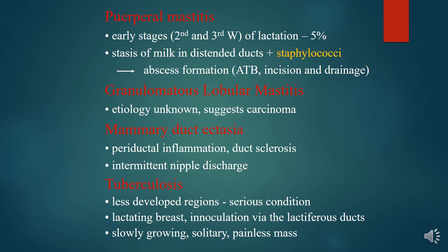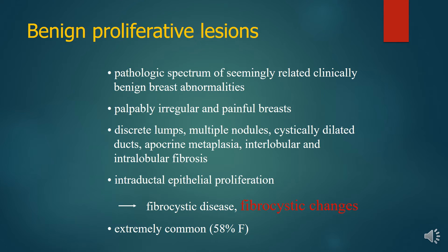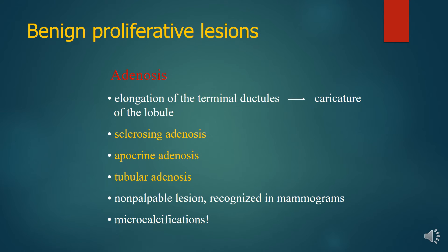Benign proliferative lesions represent a pathological spectrum of seemingly related, clinically benign breast abnormalities. Features include palpably irregular breast, discrete lumps, multiple nodules, cystically dilated ducts, apocrine metaplasia, interlobular and intralobular fibrosis — seen as fibrocystic change. Adenosis is elongation of the terminal duct tubules with sclerosis; types include sclerosing adenosis, apocrine adenosis, and tubular adenosis. These are non-palpable regions recognized on mammograms, and there can be micro- or macrocalcification.